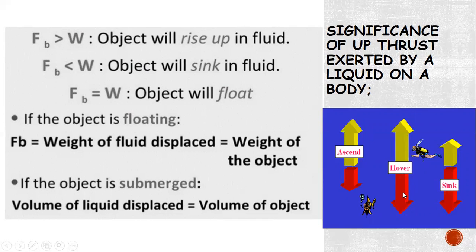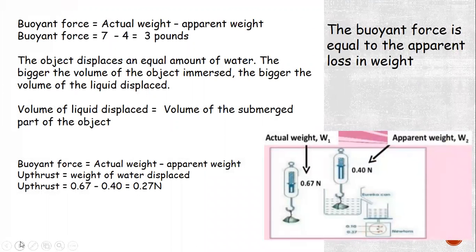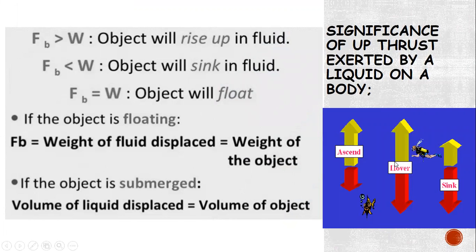Second, if the buoyant force and the weight of the object are equal, the object will hover — it can be floating submerged, partially above or partially below the water, just floating inside the liquid. Third, if the buoyant force is less than the weight of the object — you can see the weight arrow is larger — the object will sink. A needle, for example, has a weight greater than the weight of the fluid it displaces because its volume is very small, so it always sinks.